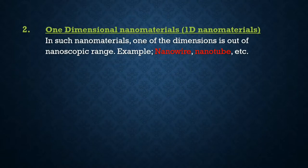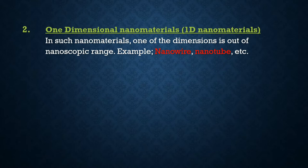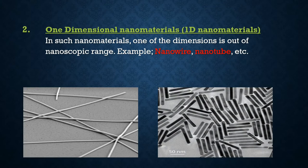The second classification is one-dimensional (1D) nanomaterials. In such materials, one of the dimensions is out of nanoscopic range — meaning length, breadth, or height has a value more than 100 nanometers. Examples are nanowires and nanotubes. You can see that their length is more than 100 nanometers but their diameter is not, so only one dimension exceeds 100 nanometers.